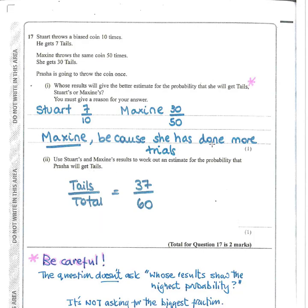To get an even better estimate, combine both sets of results: Stuart threw 10 times, Maxine 50 times, giving a total of 60. Stuart got 7 tails and Maxine got 30, giving a total of 37 tails. So the combined probability estimate is 37 out of 60. Note that we're not adding the fractions 7/10 and 30/50 — we're combining the raw results. Leave the answer as 37/60; you don't need to convert to a decimal or percentage.